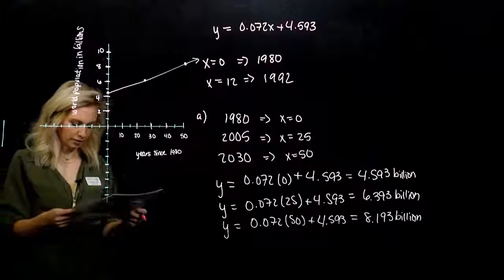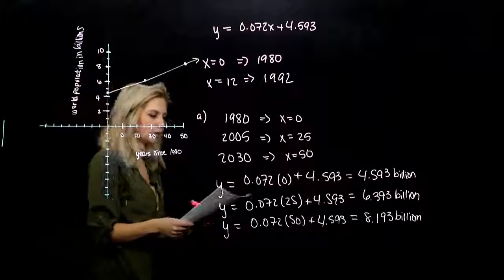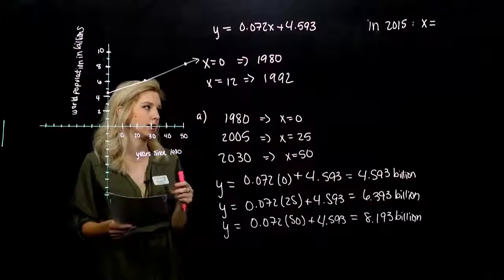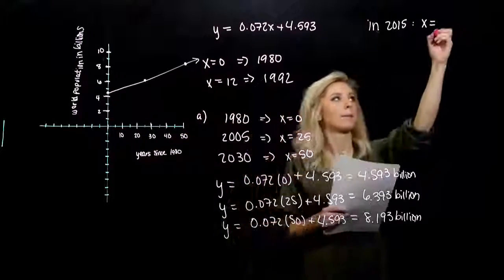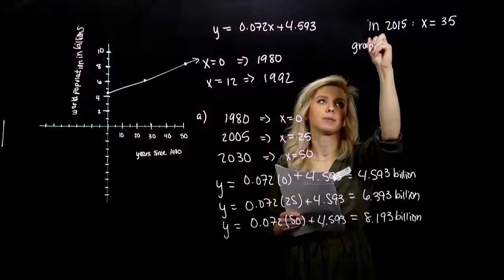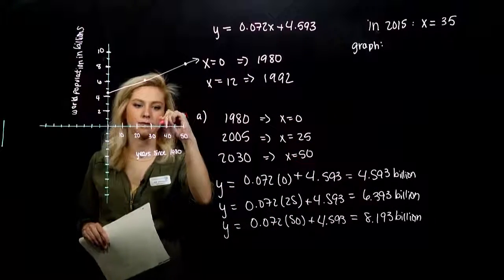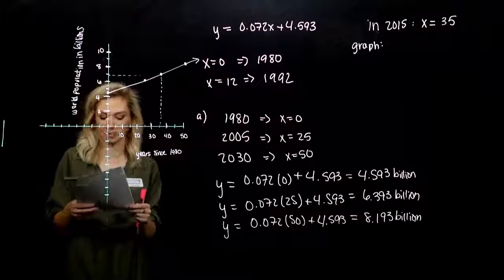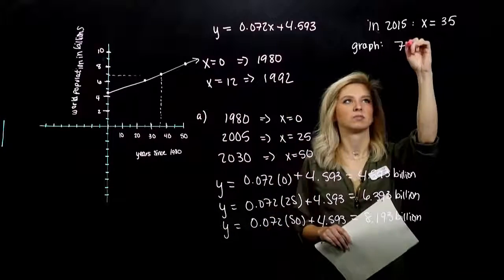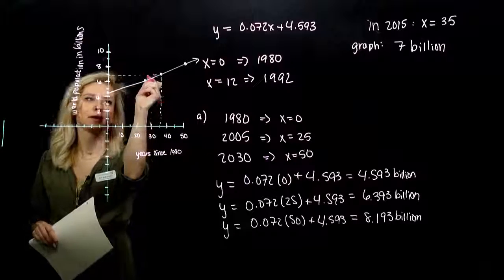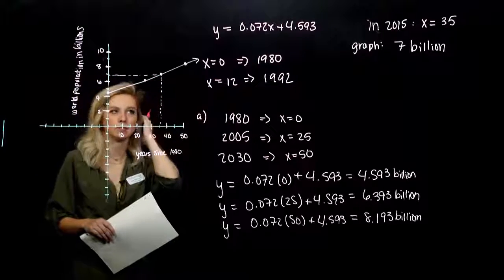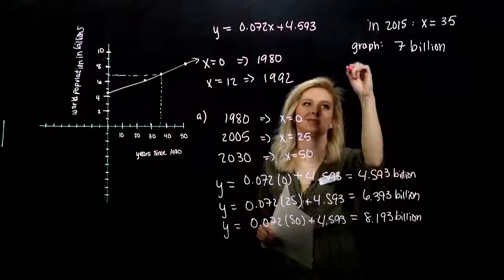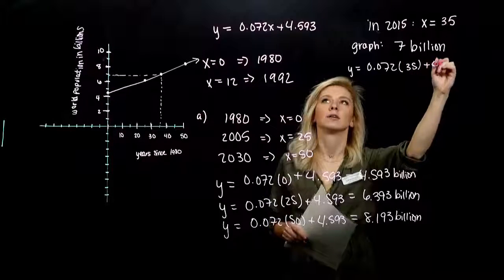What else were we asked to solve? Use this graph to estimate the world population in 2015. In 2015, what x value are we looking at? How many years after 1980 is 2015? 35. In the graph, let's estimate the population. Around 35 is right here. If I follow that up to my point and follow it in, maybe yours, hopefully yours is a little bit better. I'm thinking around 7 billion. So when I plug in 35, what do I get out?